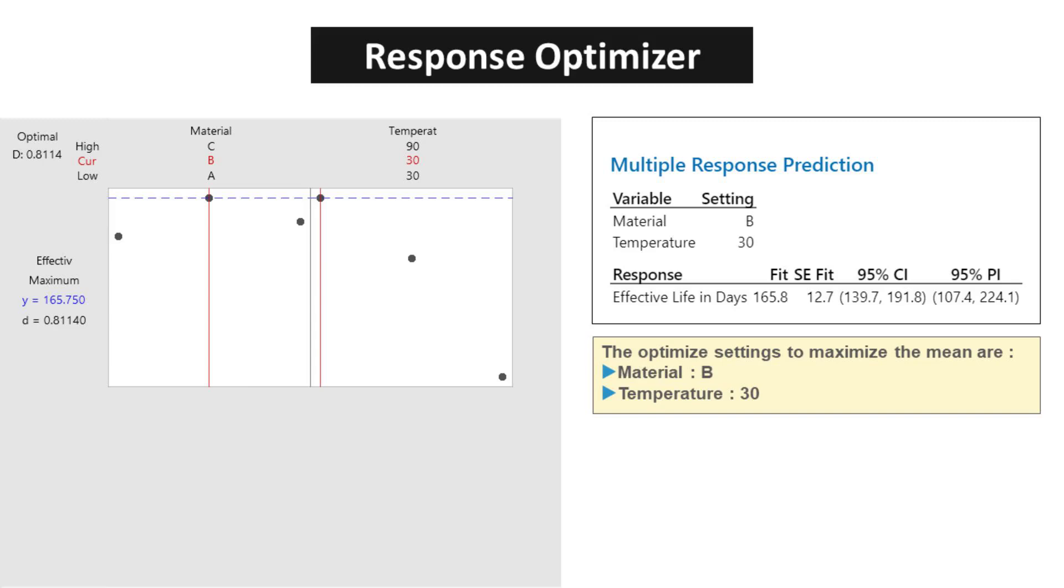Composite Desirability, D, evaluates how the settings optimize a set of responses overall. Desirability has a range of 0 to 1. 1 represents the ideal case, 0 indicates that one or more responses are outside their acceptable limits. Here, the optimal desirability 0.8114 is close to 1, which indicates the settings seem to achieve favorable results for the response.